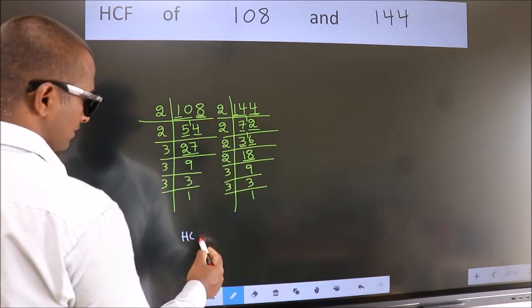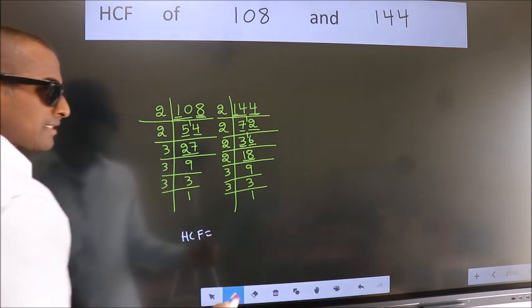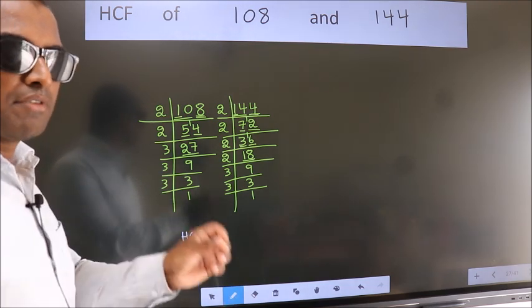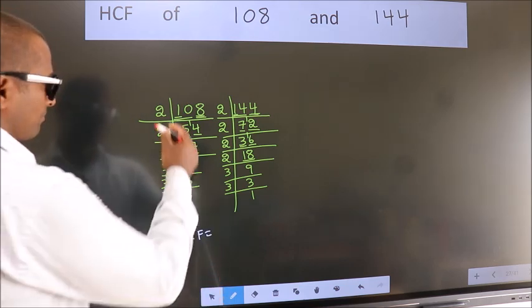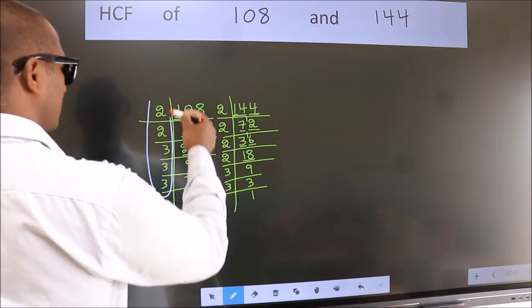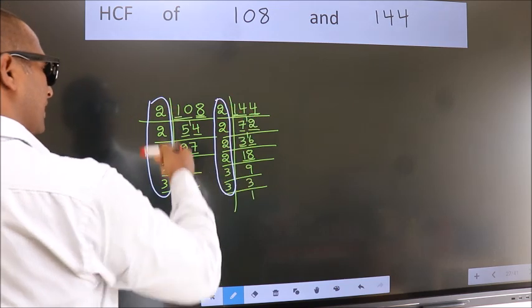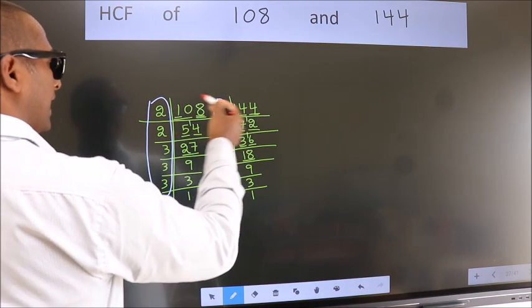HCF is the product of the numbers which should be present over here and also here, here and here.